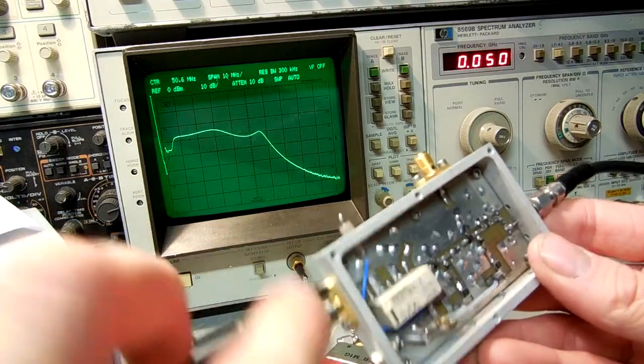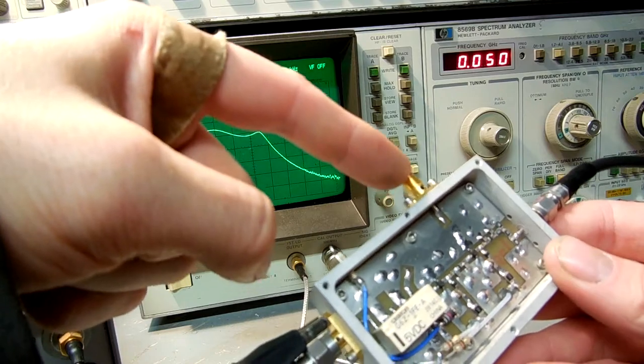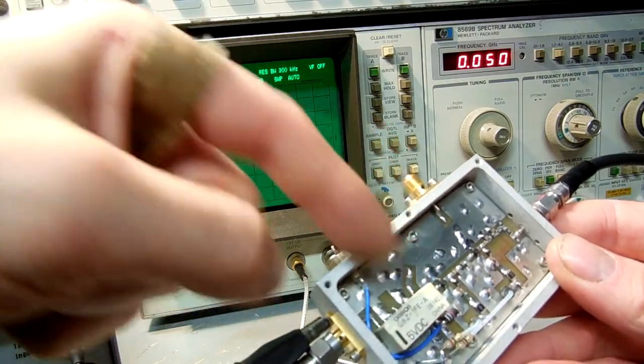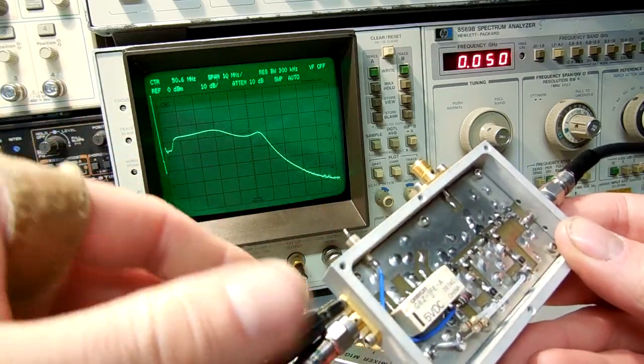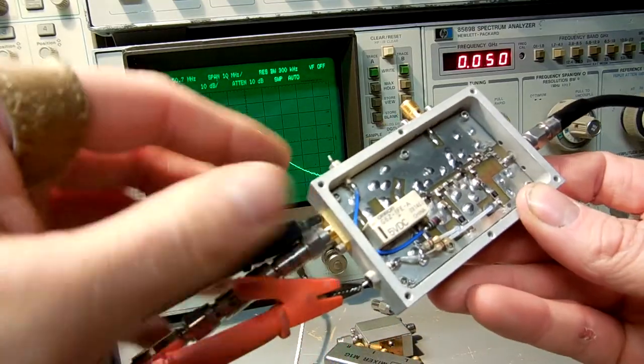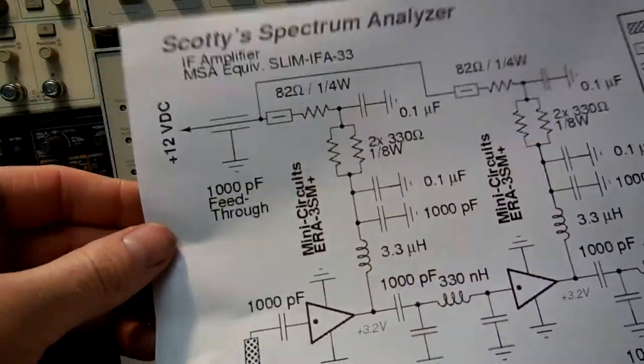To select the relay, I have the external IF input from this SMA jack right here. It's just a 5 volt running through this feed through. And of course I got 12 volts for the bias.